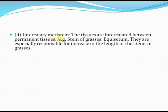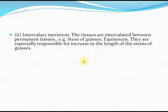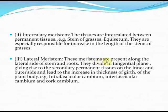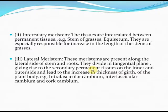Intercalary meristems are intercalated between permanent tissues, such as in the stem of grasses and Equisetum. They are especially responsible for the increase in length of grass stems. Lateral meristems are present along the lateral sides of stems and roots. They divide in the tangential plane, giving rise to secondary permanent tissues on the inner and outer side, leading to an increase in the thickness or girth of the plant body.